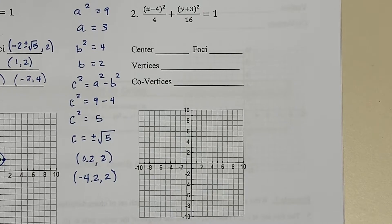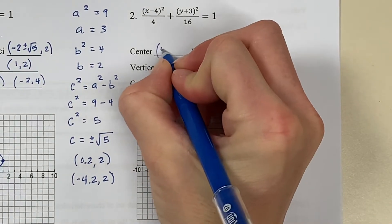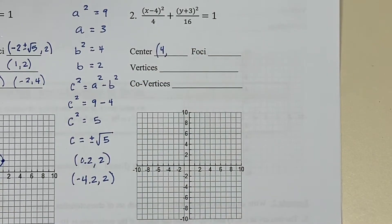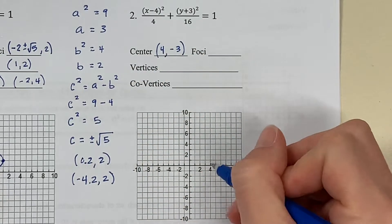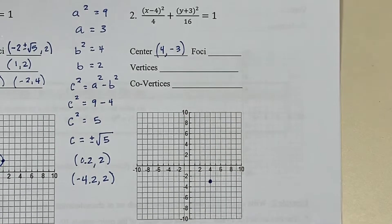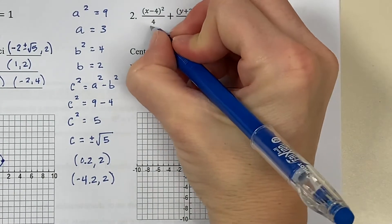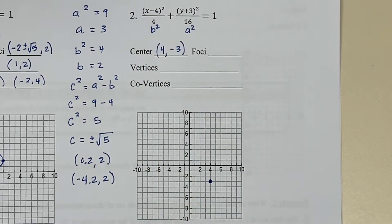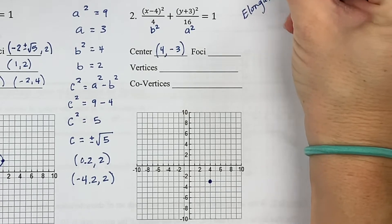Problem number two. First, I need to find the center — (h, k). h is the number in the quantity with x, so that's 4. k is the value in the quantity with y; I have a + 3, so that's negative 3. So I have a center at (4, -3). A squared is always the largest denominator, so a² = 16 and b² = 4. Because a squared is below the y, this is going to be elongated parallel to the y-axis.